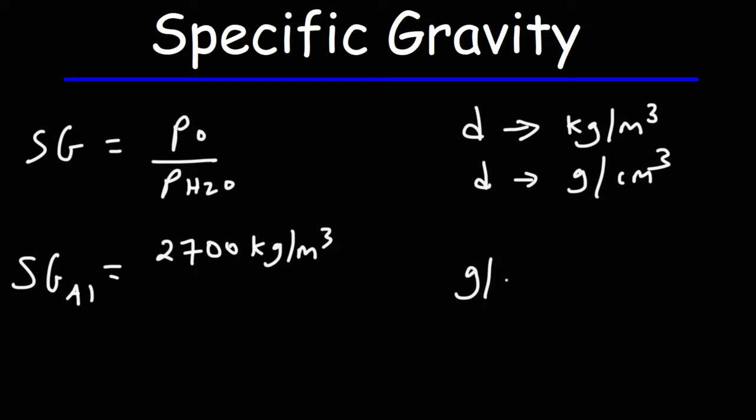If you want to do the conversion - to convert from grams per centimeter cubed to kilograms per cubic meter - you could simply multiply by a thousand. So in chemistry, the density of aluminum would be reported as 2.7 grams per cubic centimeter.